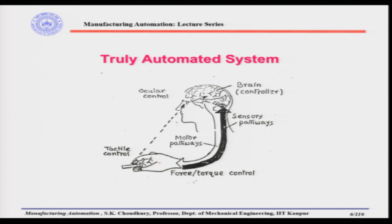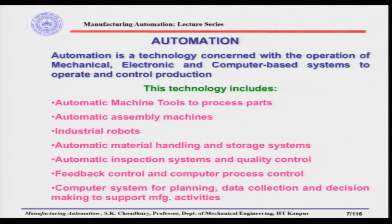When putting a screw in a threaded hole, the brain decides, the sensory pathway communicates, and the hand carries out the action. The ocular control continuously monitors whether it is going correctly, and if more or less torque is required, we adjust accordingly. This continuous feedback is what the human being does daily and what we want to replicate in an automated system.